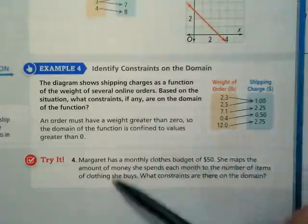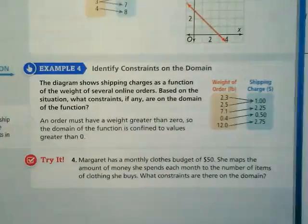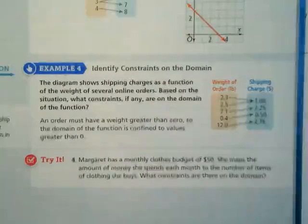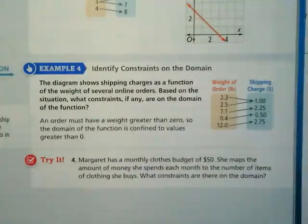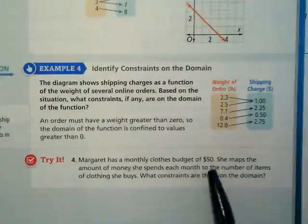She maps the amount of money she spends each month. Can you guys see her mapping, like making one of those maps out of how much dollars she spends? But let's think about what constraints are there on her domain. Her domain is a maximum of what? $50.